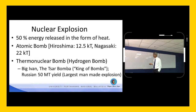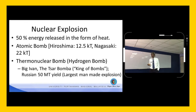Bigger than atomic bombs is the thermonuclear bomb, sometimes called the hydrogen bomb. These use atomic bombs as a trigger. The biggest ever detonated was the Russian-made Tsar Bomba — the King of Bombs — with a yield of 50 megatons. The Americans also detonated a device of about 50 megatons. But if you look at the work of nature, this mechanical explosion at Krakatoa was 200 megatons.